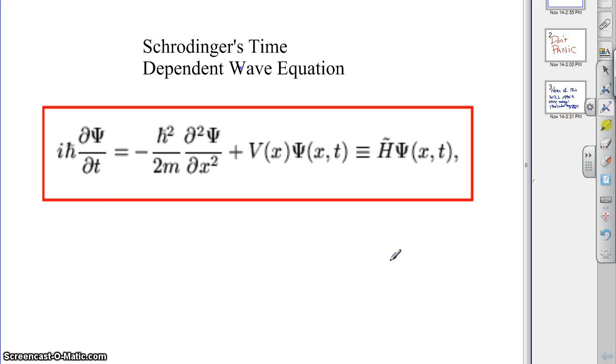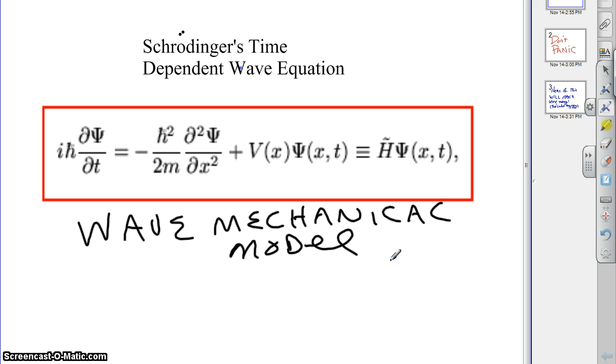Couldn't figure out how to make an umlaut with the smart board. Schrödinger's time-dependent wave equation. This is the wave mechanical model. It's a great, big, complicated math thing that even if I wanted you to do, you couldn't because it involves calculus. Good old calculus.